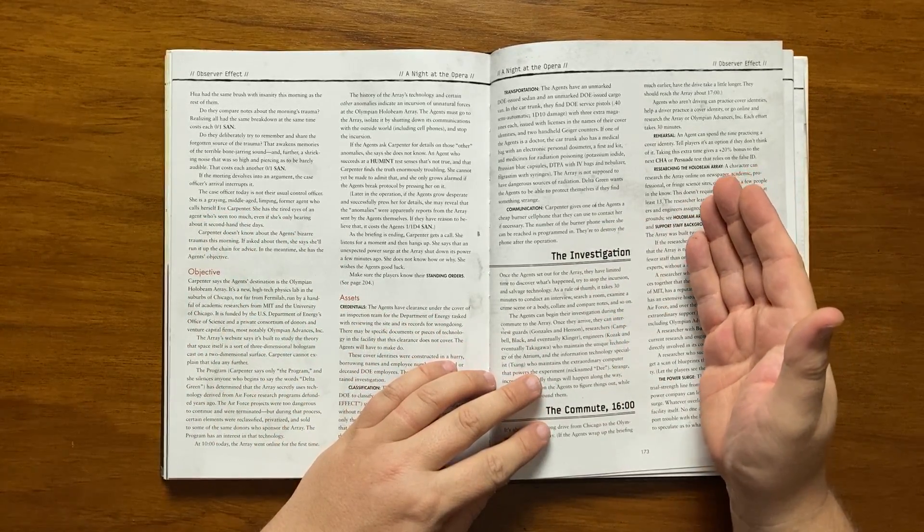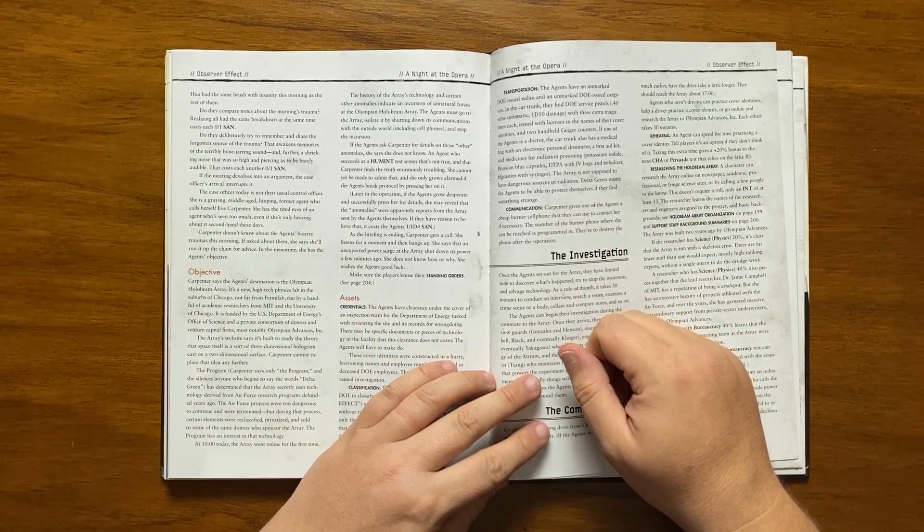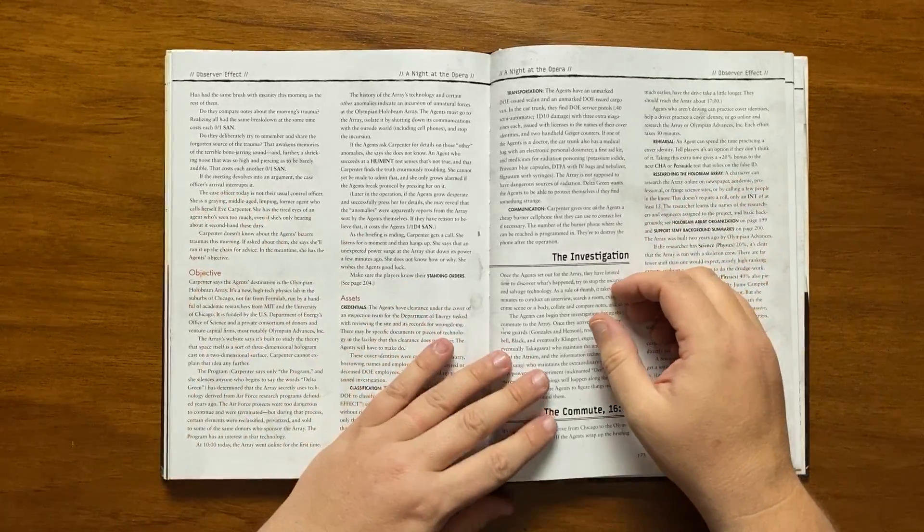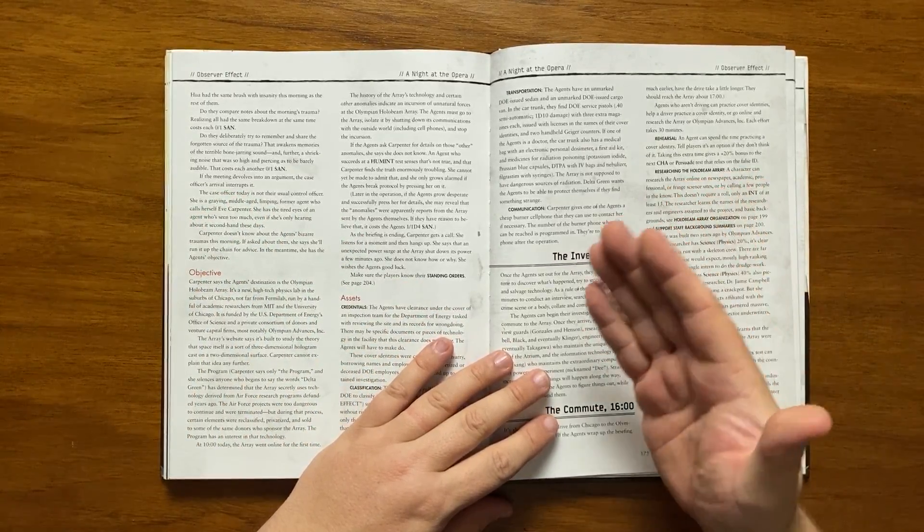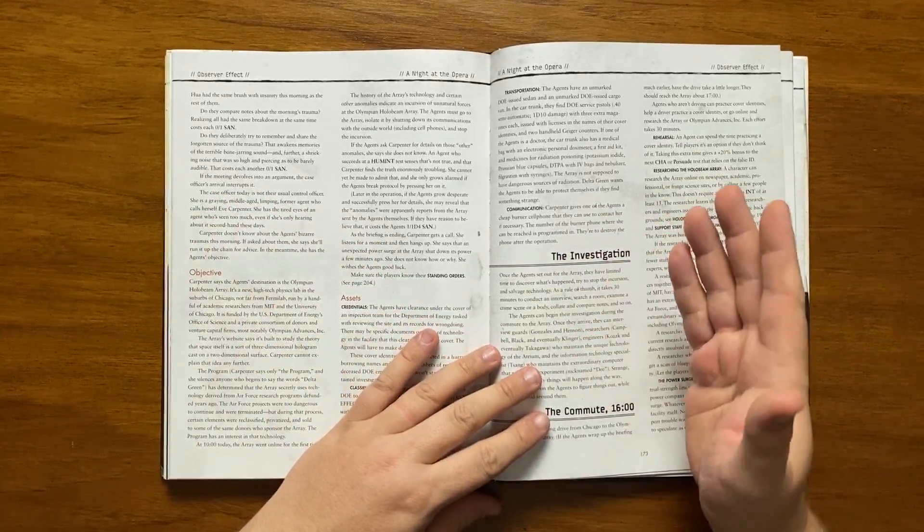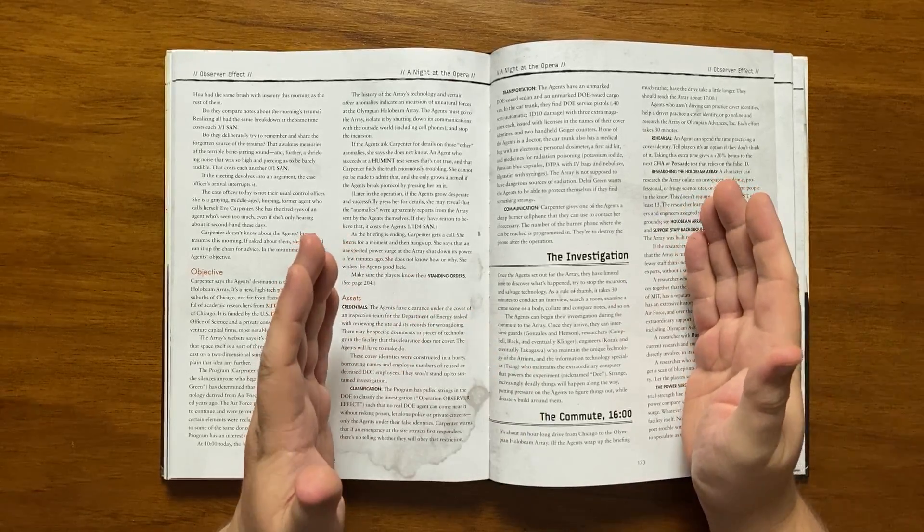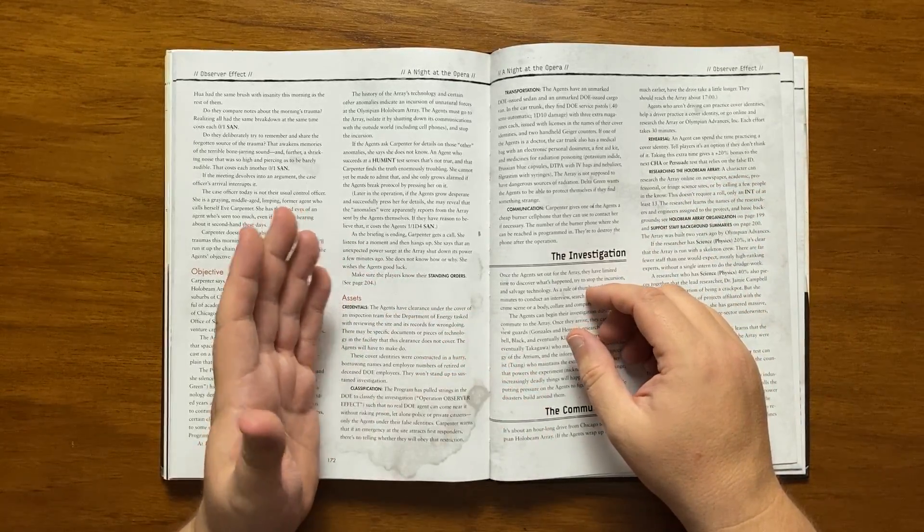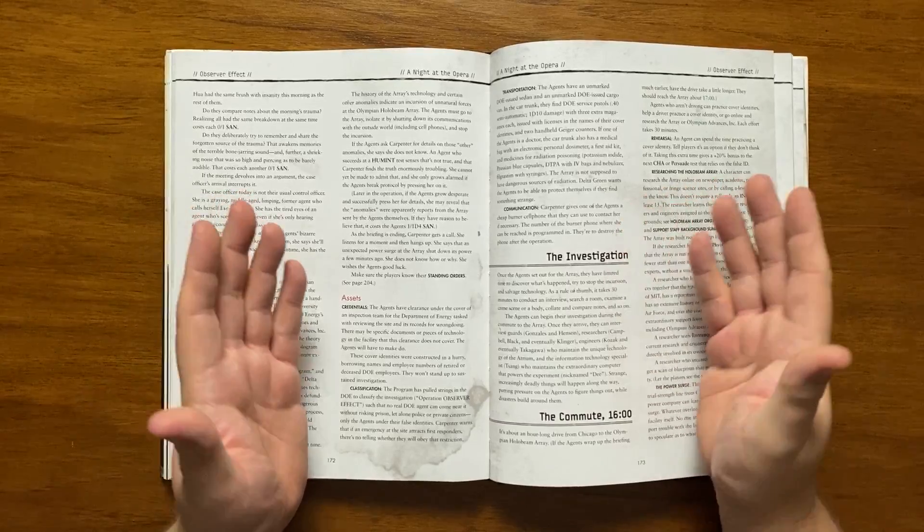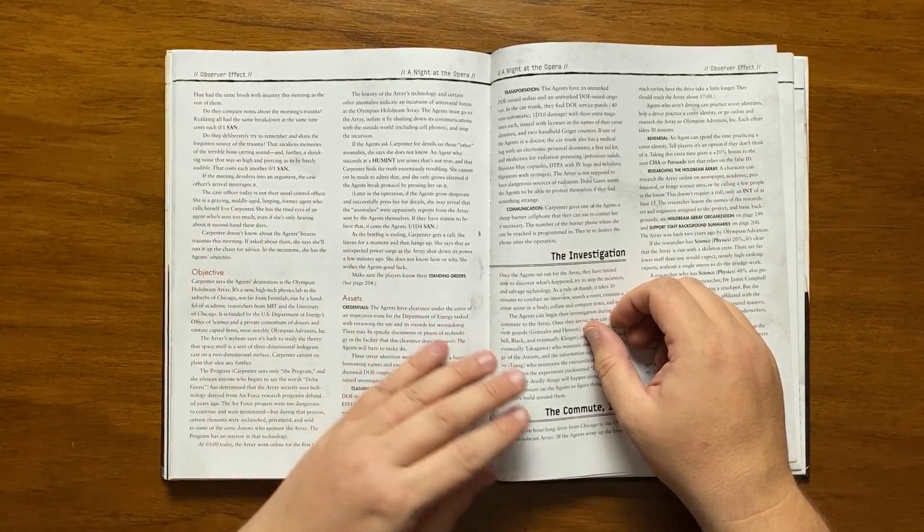They are given a cheap burner phone by Carpenter, which is to be destroyed on completion, an unmarked Department of Energy van, replete with service pistols, two gag counters and a medical pack if one of the agents is a doctor and sent on their way. They only have limited time to find out what is going on, stop it and remove the technology. It takes them around an hour to get to the Array and they arrive at around 1700 hours.